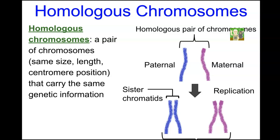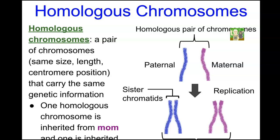In addition to same size, shape, and length, homologous chromosomes also carry the same genes because they are the same chromosome number. One homologous chromosome is inherited from mom and one from dad, leading to the maternal and paternal chromosomes. We can see all 23 pairs laid out when we look at karyotypes.